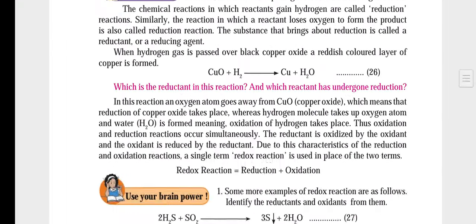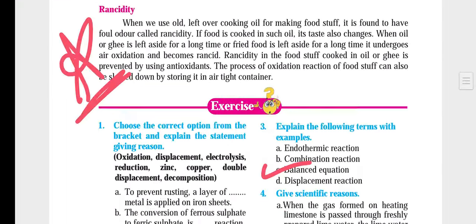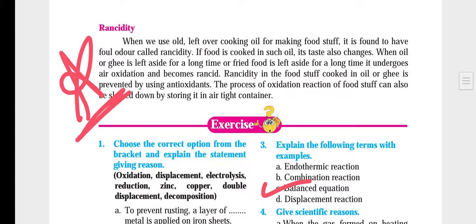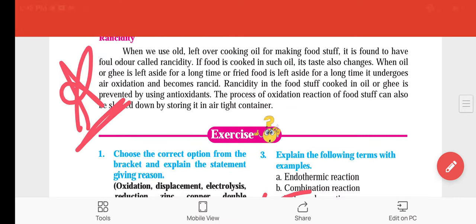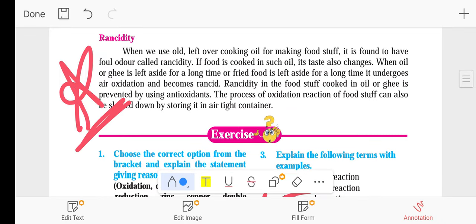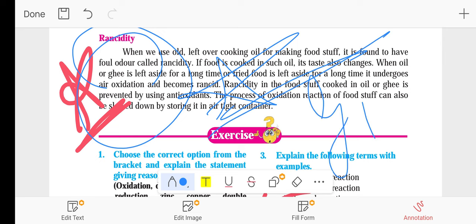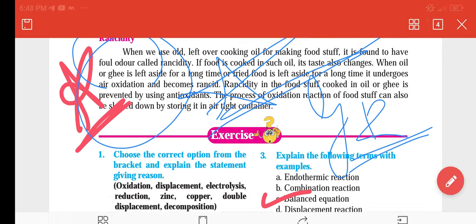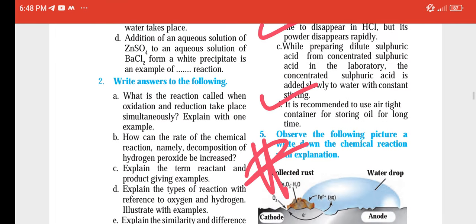When I move further on these pages, we have rancidity on page number 45. Rancidity is again an important question from the give-reason point of view. You need to revise that.